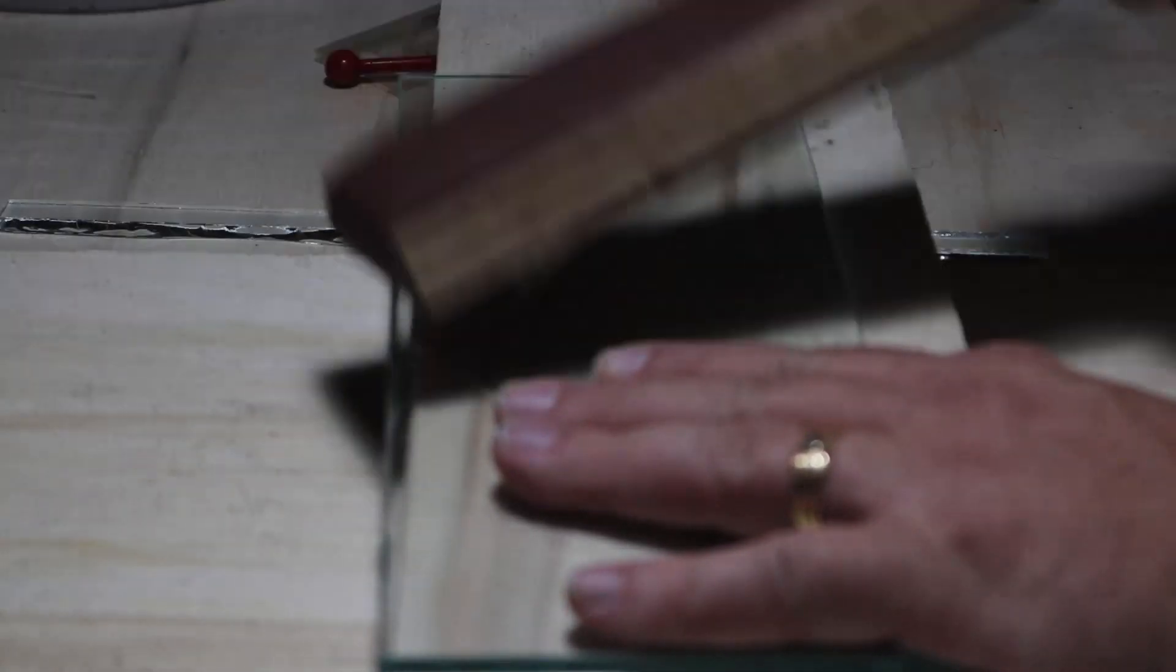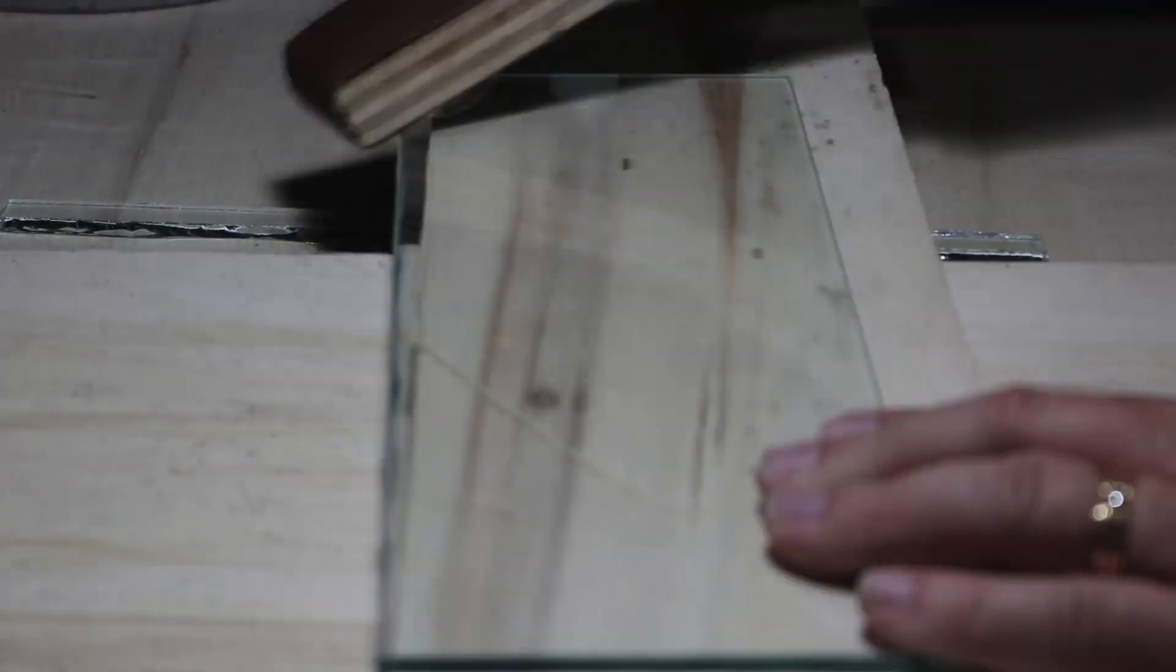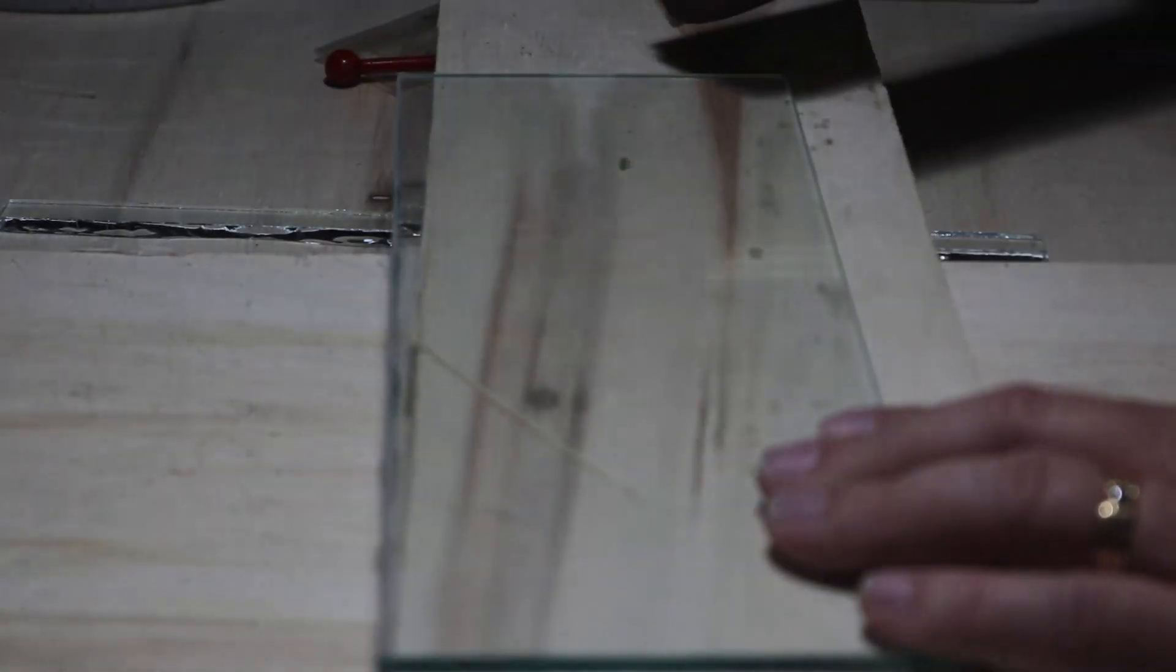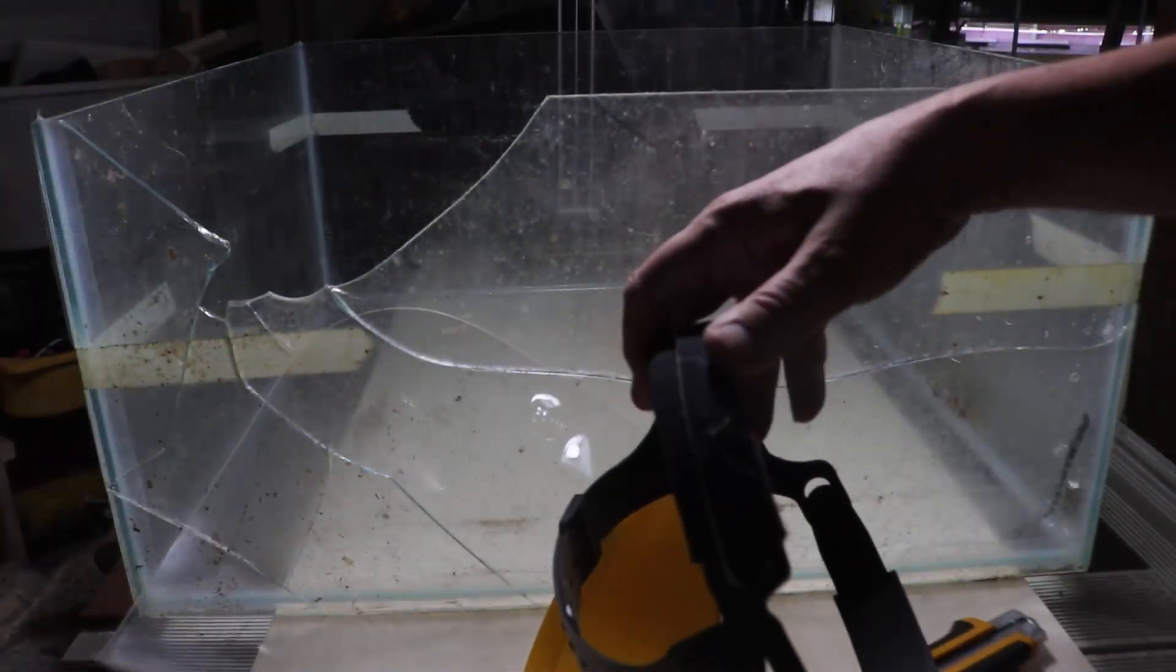And what you can do then is just sand that off. Now those of you who don't have a belt sander, you can just take a piece of any kind of sandpaper and just put it on a piece of wood like this and just sand it off. Just in case you don't have the tools, it's really not that necessary to worry about.